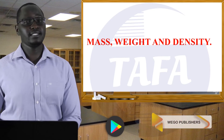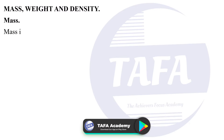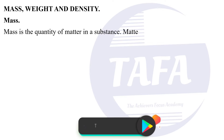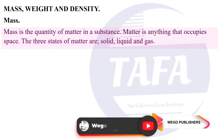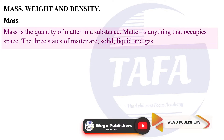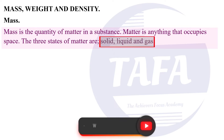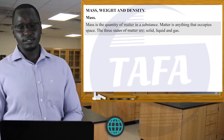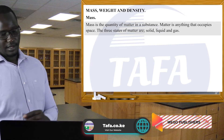Mass, weight, and density. Mass is the quantity of matter in a substance — matter is anything that occupies space. The three states of matter are solid, liquid, and gas. The SI unit of mass is the kilogram.